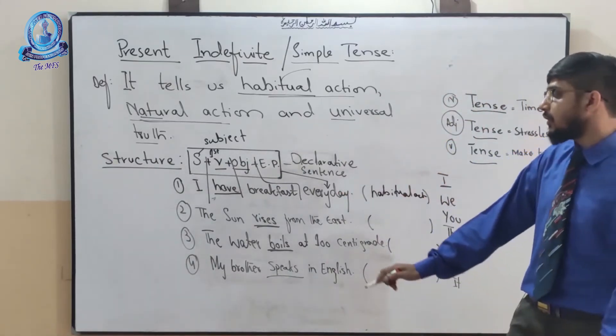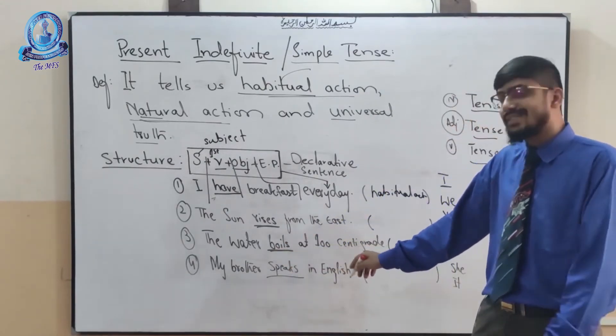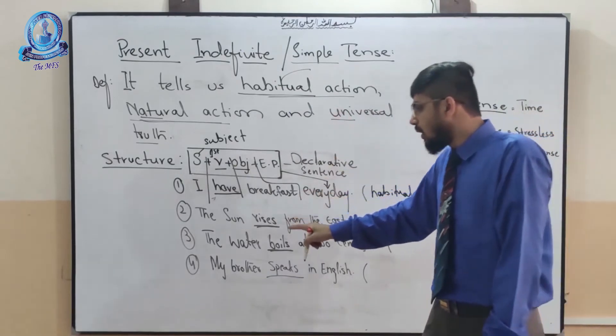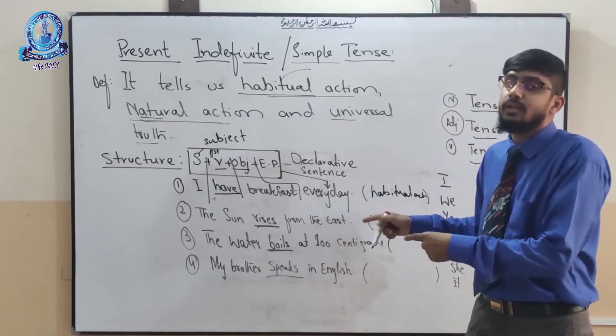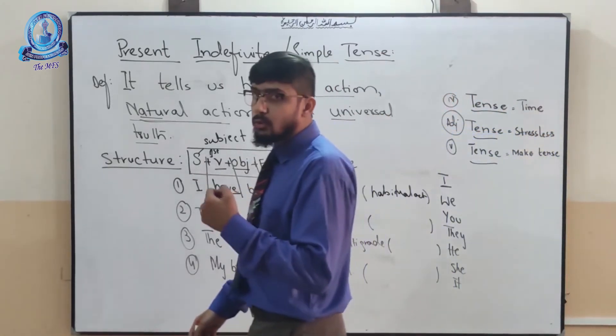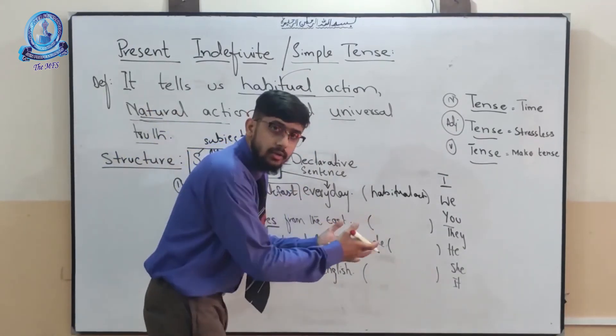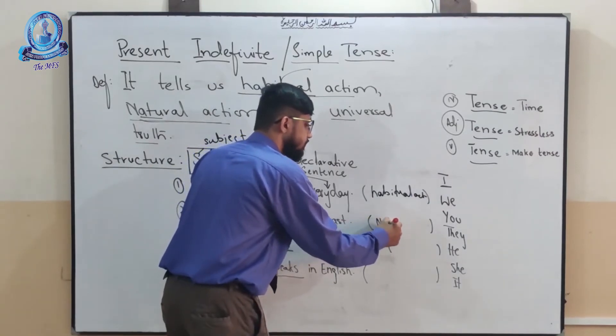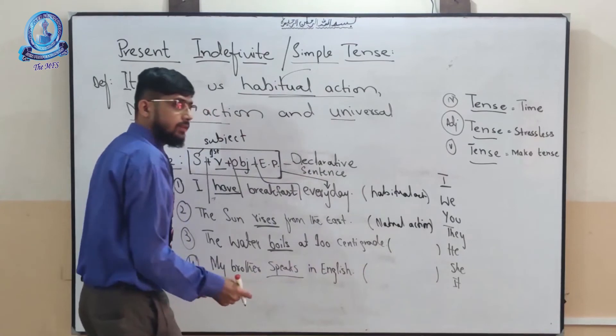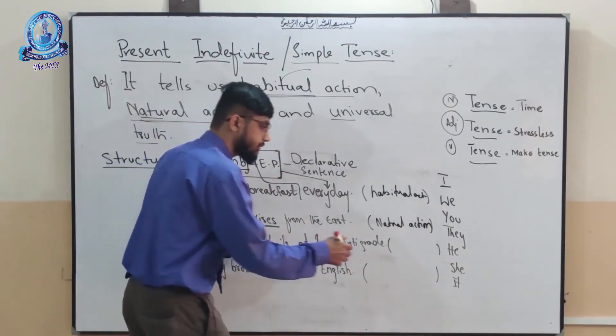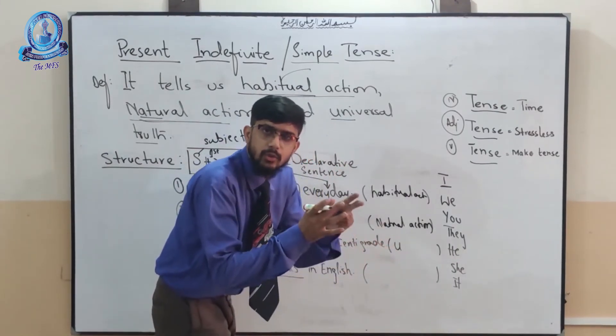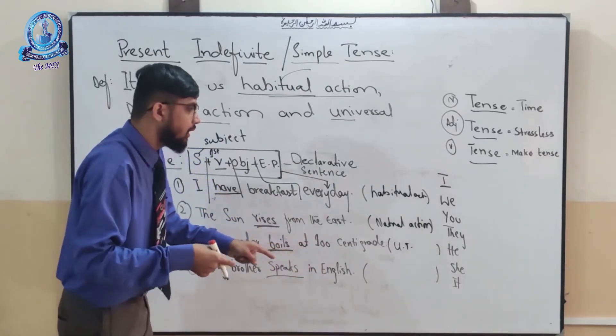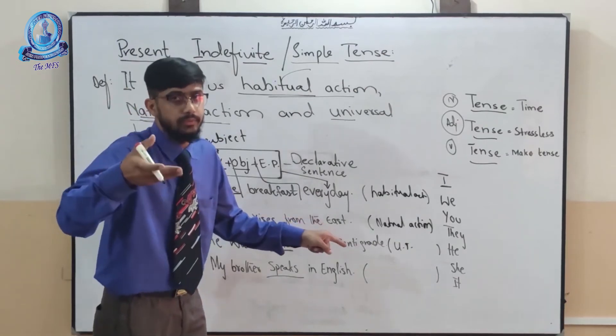Let's come towards the third example today. That is called, the water boils at 100 centigrade. Definitely, we have given the example of the habitual action, the natural action. So what remains? This is universal truth. Yes. The water boils at 100 centigrade. This is the third example of this action. So I would like to ask you and to know you. I am going to write it to make it clear for you. This is what is this? Oh yes. The sun rises from the east. This is natural action. The third one is, the water boils at 100 centigrade. This is universal truth. I am going to write it in a shorter manner to make you understand. Universal truth. UT. It is not good to write, but just to make you understand in an easy manner. It is informal. You should not use it while writing or attempting your exams.